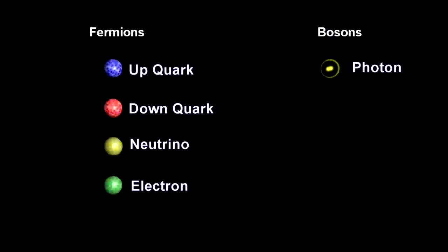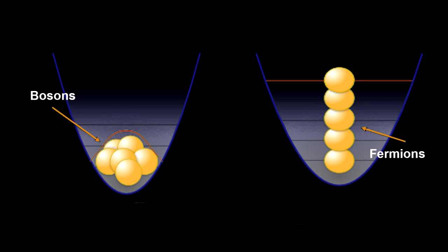You can imagine that large groups of particles that can't fit into the same quantum state will behave differently than particles that can. In an energy well, the bosons all sit in a condensate at the bottom. The fermions arrange themselves in a hierarchy, like electrons in an atom.